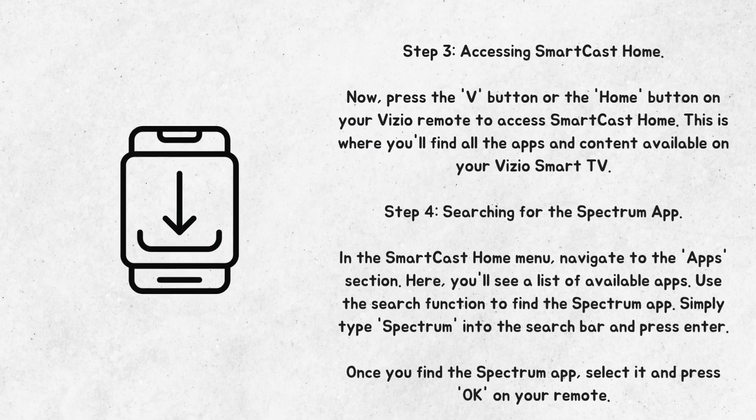Step 3: Accessing Smartcast Home. Now, press the V button or the Home button on your Vizio remote to access Smartcast Home. This is where you'll find all the apps and content available on your Vizio Smart TV.